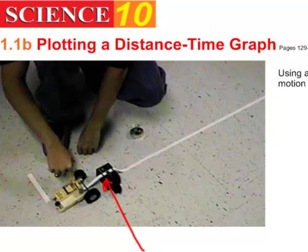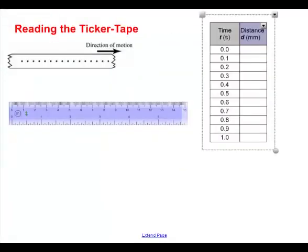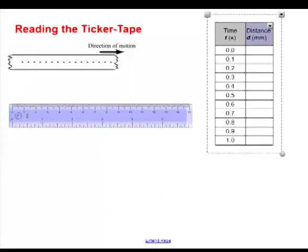What we have is a long strip of paper that goes through the timer and the timer makes little dots on the paper as the paper is pulled through by the little cart here. So what you get when the experiment is over is this ticker tape that has all these dots on it.